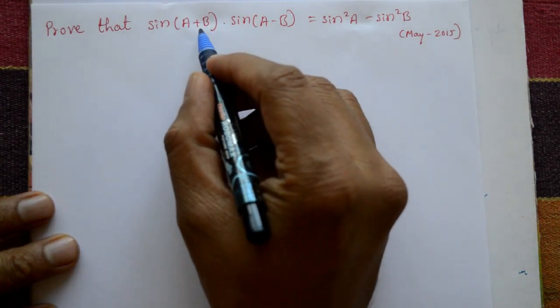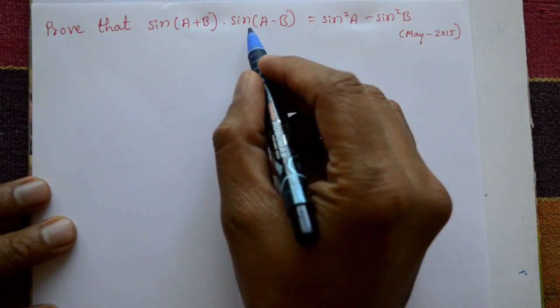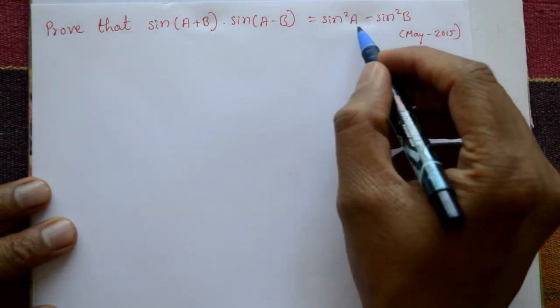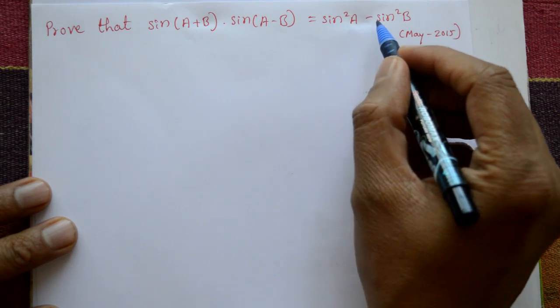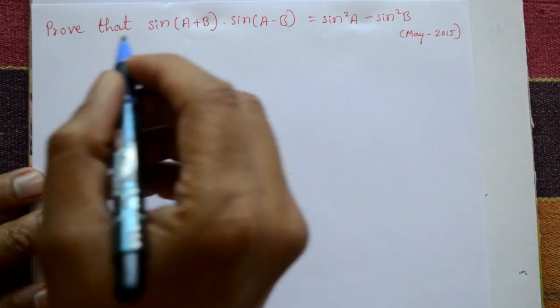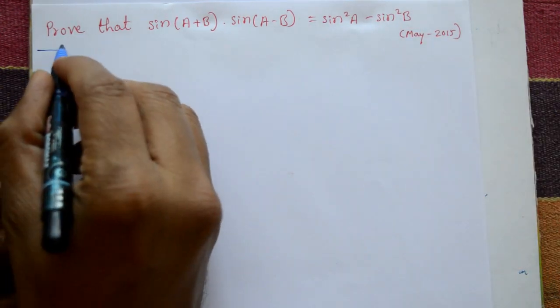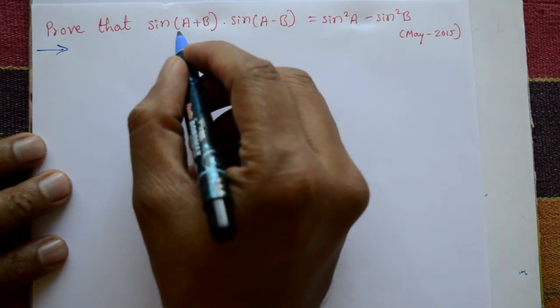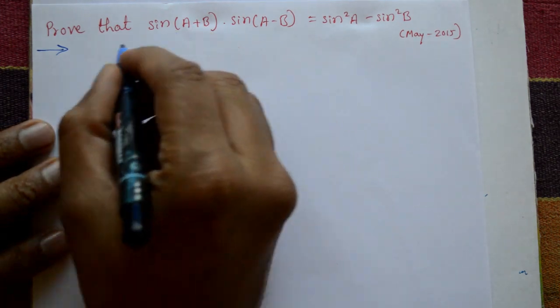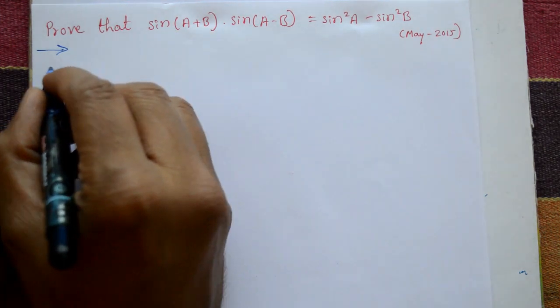Prove that sin(a+b) multiplied by sin(a-b) is equal to sin²a minus sin²b. Now, for the solution, using the standard compound angle formula for sin(a+b).